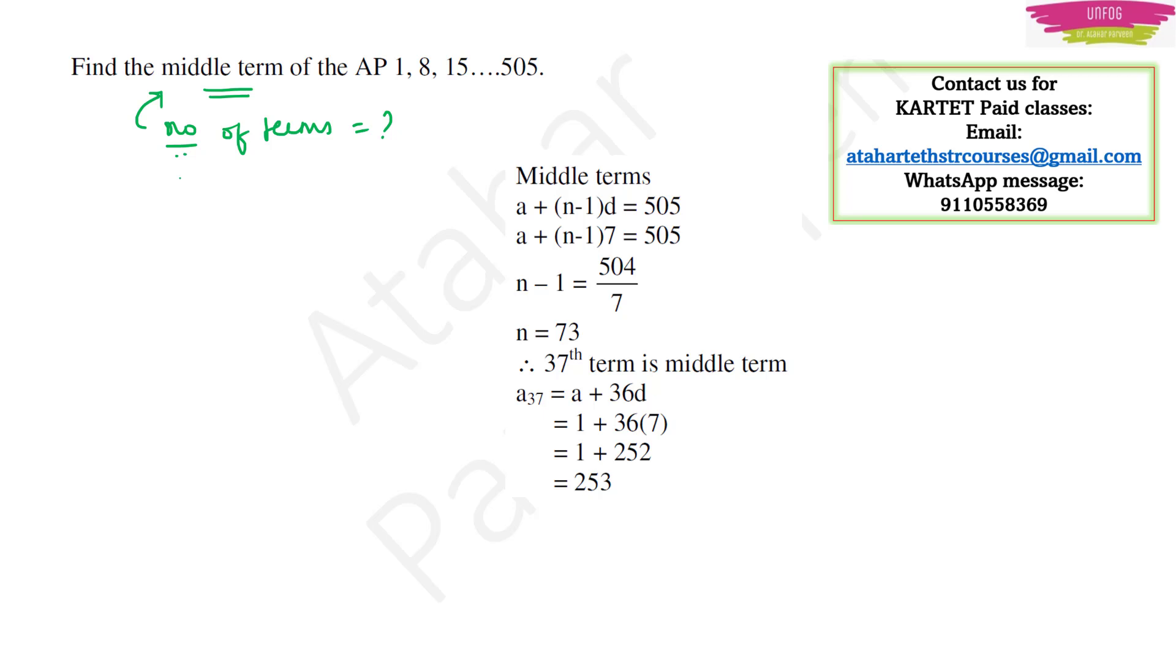We have the arithmetic progression 1 comma 8 comma 15 till 505. So my a is 1 here and common difference is 8 minus 1 which is equal to 7.